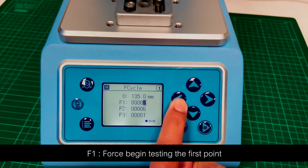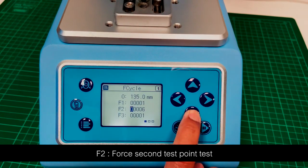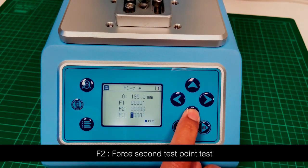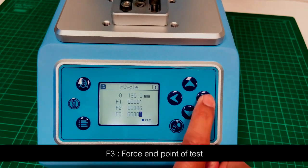F1: force begin testing the first point. F2: force second test point. F3: force end point of test.